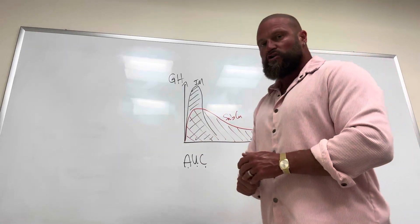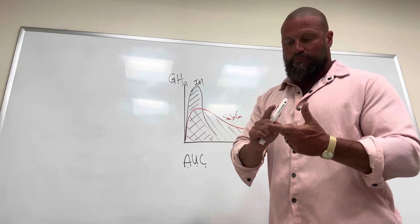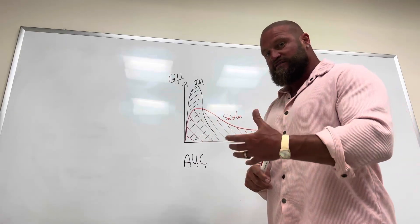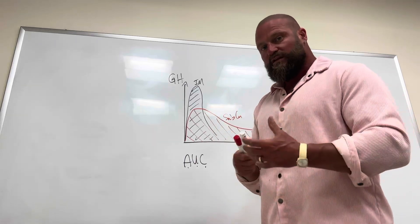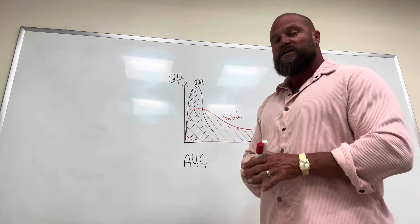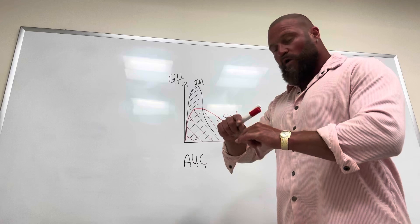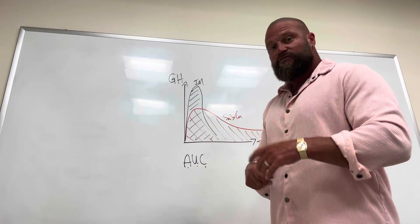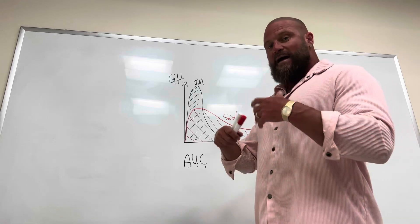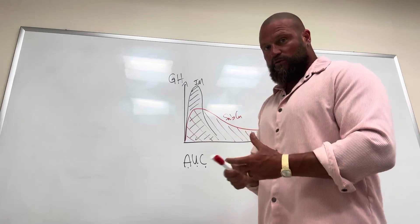As you know, growth hormone has fat burning effects. And in order to have muscle building effects, growth hormone has to travel to the liver, where it is getting converted into IGF-1, insulin-like growth factor 1. And IGF-1 is the actual anabolic muscle building hormone.